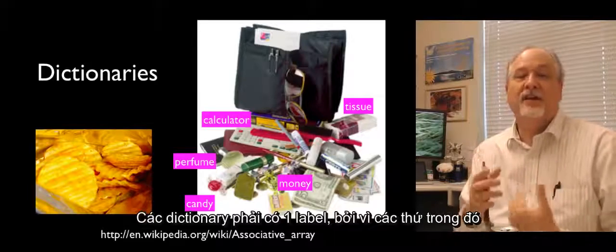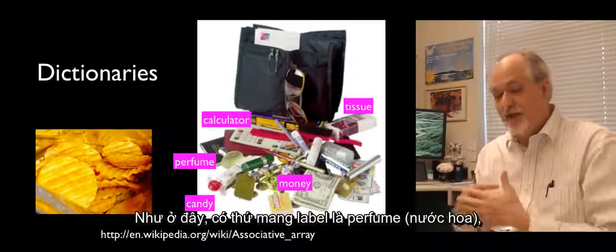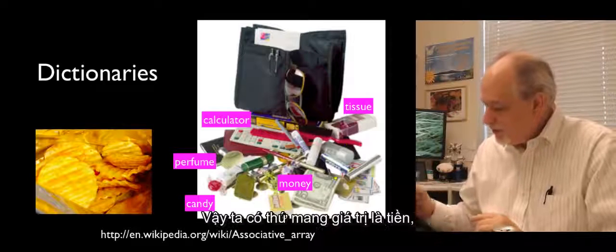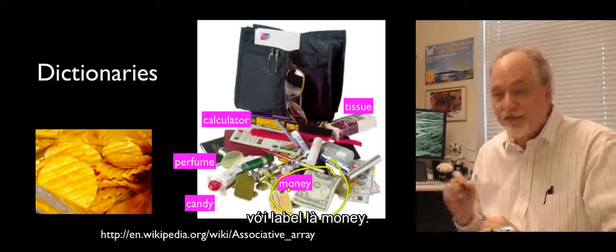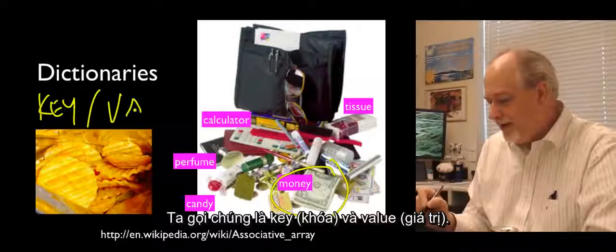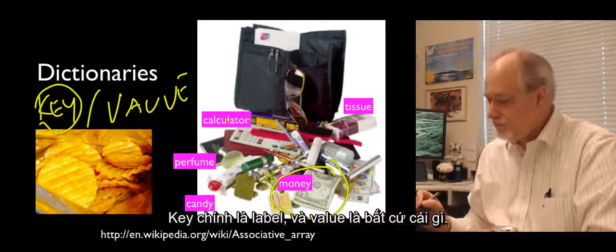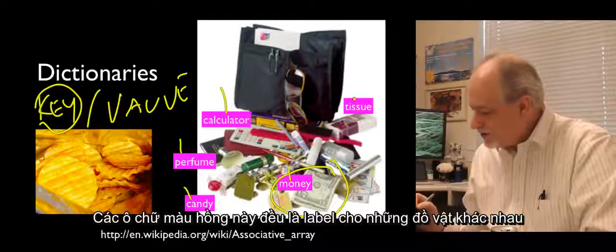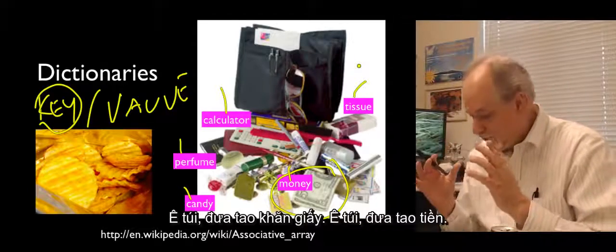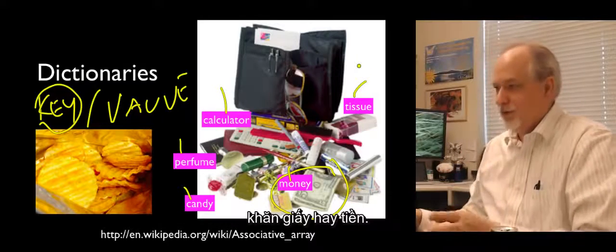Dictionaries have to have a label because the stuff is not in order. There's no such thing as the third thing — there is the thing with the label 'perfume,' the thing with the label 'candy,' and the thing with the label 'money.' We call these key-value pairs. The key is the label, and the value is whatever is stored. So you could say to your purse: give me my tissues, give me my money, and the purse gives you back what you asked for.